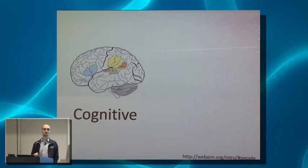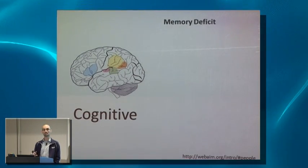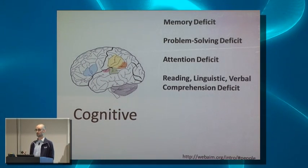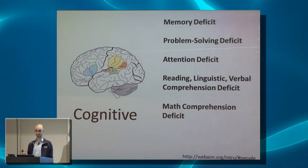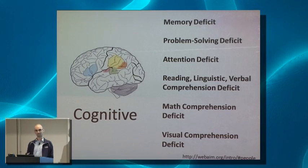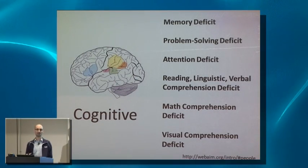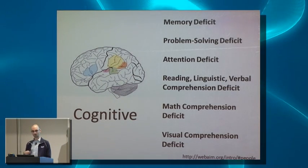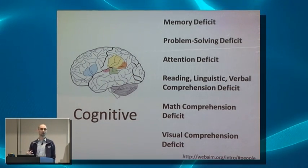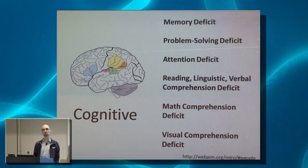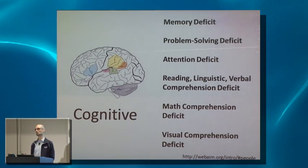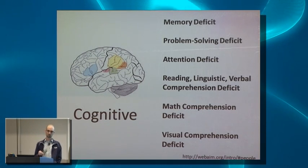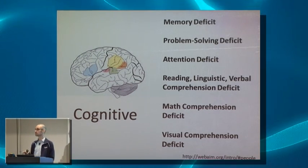Cognitive issues relate to the way your brain works — there are all kinds of different deficits that affect how people process information. That means interfaces shouldn't be incredibly confusing, and there are a ton of web interfaces that are incredibly confusing even for people without any cognitive issues.